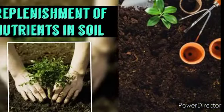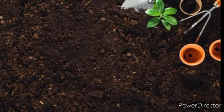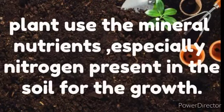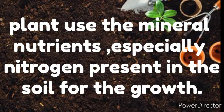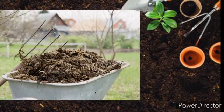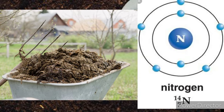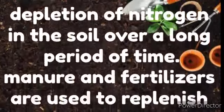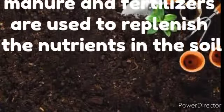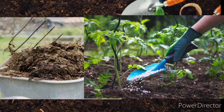Now, regarding the replenishment of nutrients in the soil: some plants use mineral nutrients, especially nitrogen present in the soil for their growth. Over a long period of time, there is a depletion of nitrogen in the soil. Manure and fertilizers are used to replenish the nutrients in the soil, providing nitrogen, potassium, phosphorus, and other essential elements.